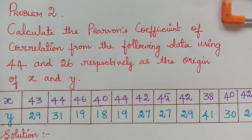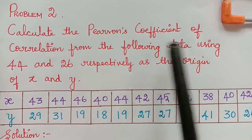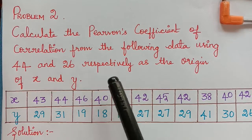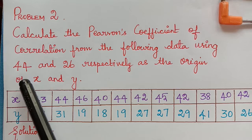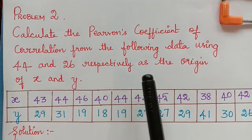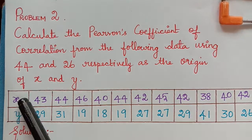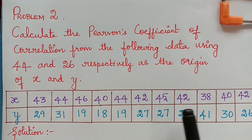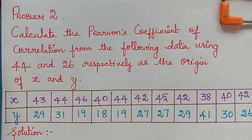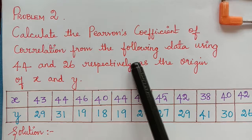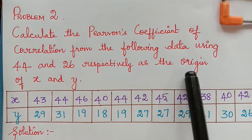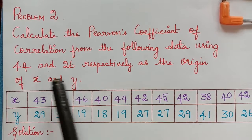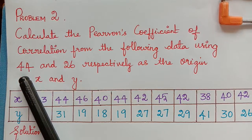Dear students, under the topic correlation, here we are going to solve the second problem. Calculate the Pearson's coefficient of correlation from the following data using 44 and 26 respectively as the origin of x and y. Normally when the values of x and y are given, we can use one of the three formulas of correlation and we can solve it. In this question, it is particularly mentioned that we have to use the origin of x and y as 44 and 26.